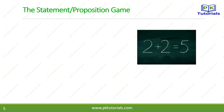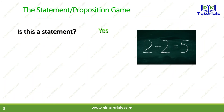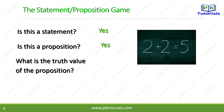Next example: the statement '2 plus 2 is equal to 5.' This is a sentence. Is this a statement? Of course, because this is a mathematical statement — the other one was a declarative sentence. Both mathematical and natural language sentences can be statements. Is this a proposition? Yes, it is a proposition. Its truth value is false.